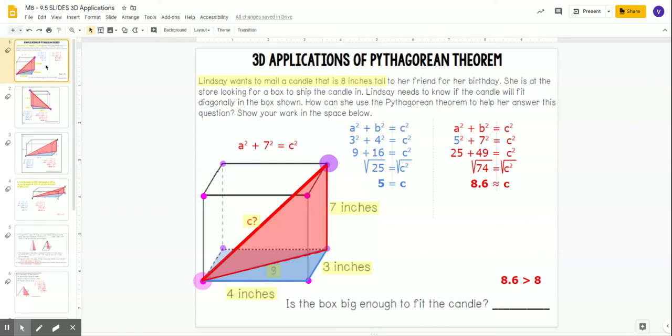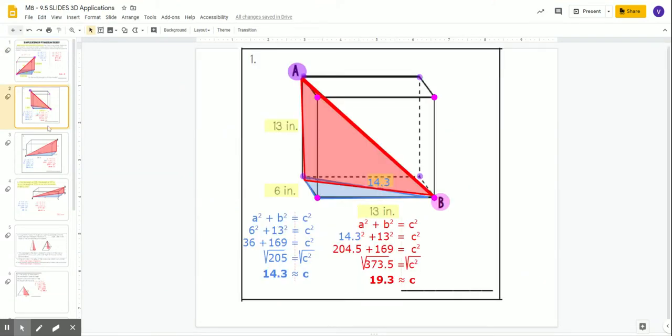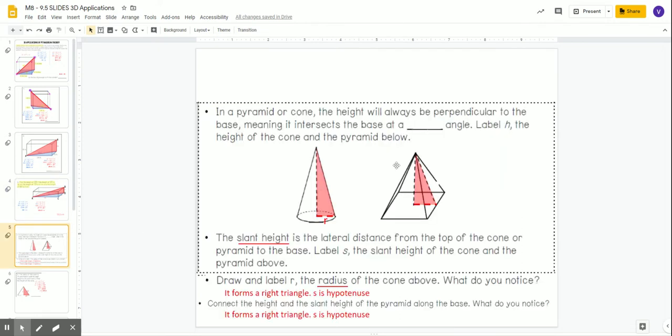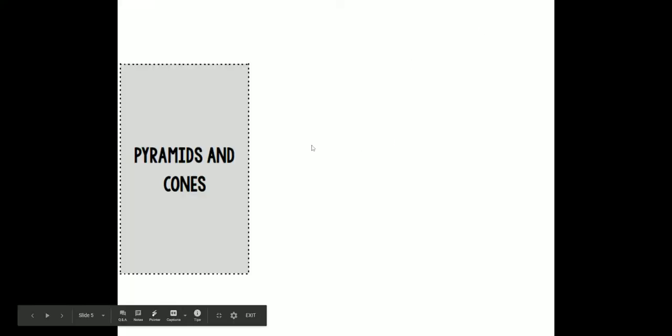This is part two of two in our video series applying the Pythagorean Theorem to 3D objects. In the first part we applied it to rectangular prisms or boxes. In the second part we're going to apply the Pythagorean Theorem to cones and pyramids. So by the end you'll know how to use the Pythagorean Theorem to find missing lengths in cones and pyramids. Let's begin.